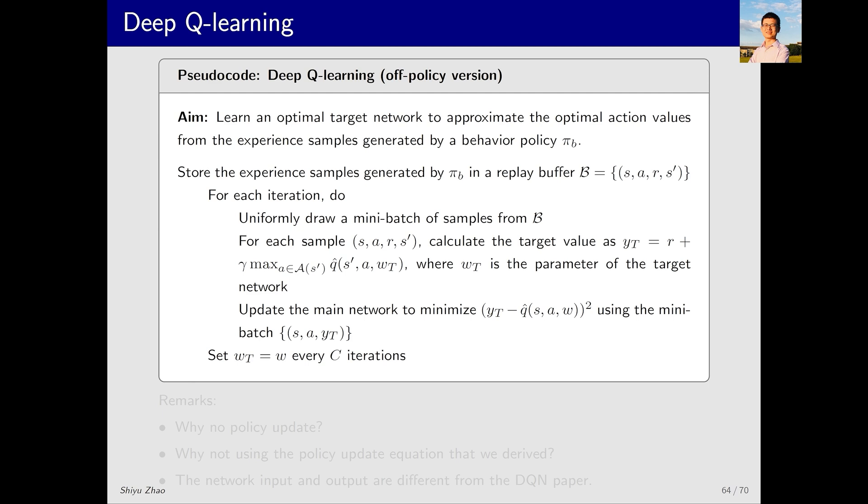We've just introduced deep Q-learning and some of its key techniques. Now let's go through the pseudocode of deep Q-learning. Note that this pseudocode is for the off-policy version. Previously when we introduced Q-learning combined with value function approximation, especially with linear functions, we provided an on-policy version. We'll now give the off-policy version.